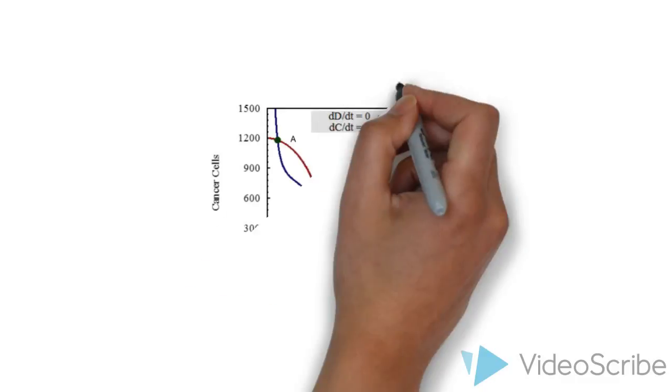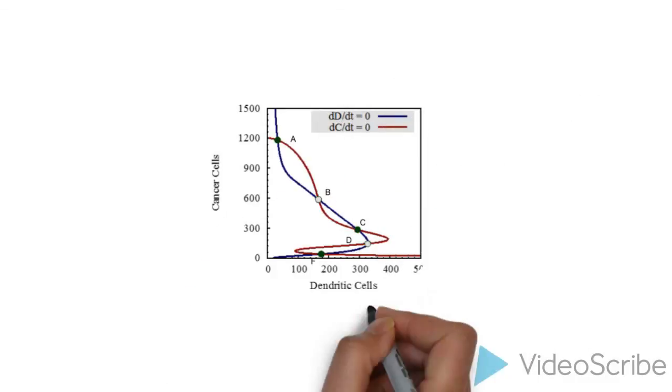From the differential equation, we are getting this graph between cancer cells and the dendritic cells. The graph illustrates the concentration of dendritic cells versus the concentration of cancer cells. There are six points on the graph labeled as A, B, C, D, E and F. The points A and F are the saddle points, that is the minimum and maximum points, whereas the points B, C, D, E are the stable points.